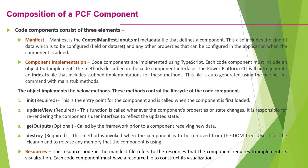In subsequent videos — video 2, 3, 4, and so on — I will demonstrate everything in Visual Studio Code. A PCF component consists of three core elements. The first is the manifest file, which is the control manifest input XML file. This is a metadata file that defines the component — it defines the name, description, and version of the component. The second element is the component implementation. Core components are implemented using TypeScript, and each core component must include an object described in the core component interface. The Power Platform CLI auto-generates a file called index.ts.